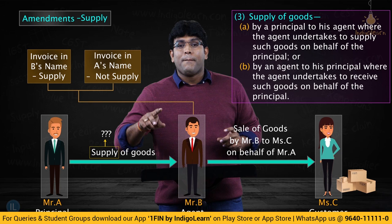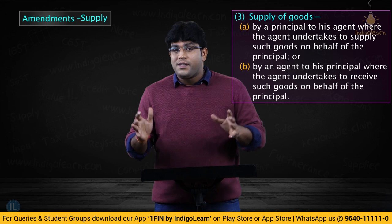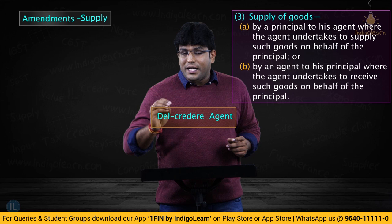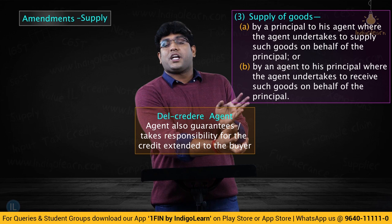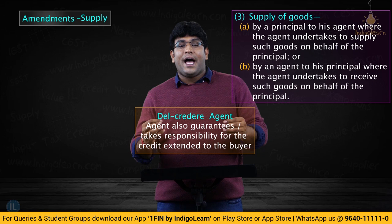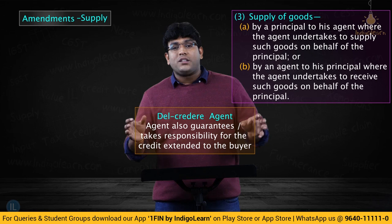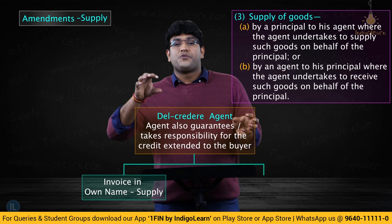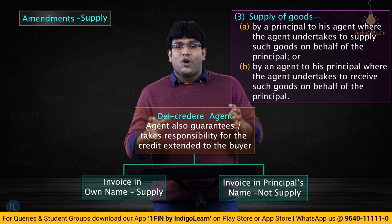In the context of a delcredere agent — an agent who undertakes the responsibility of collecting money from the customer and handing it over to the principal, thereby getting a higher commission — the law clearly specifies the same principle. If a delcredere agent subsequently issues an invoice in his own name, then the transfer of goods from principal to the delcredere agent shall be regarded as supply. But if the delcredere agent does not issue an invoice in his own name, then that transfer shall not be regarded as supply.